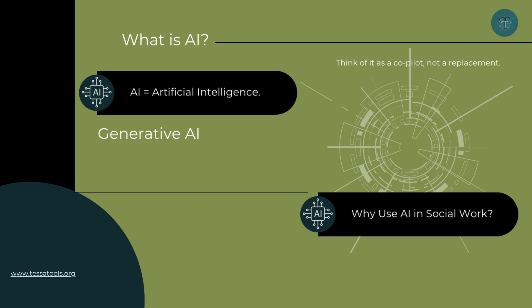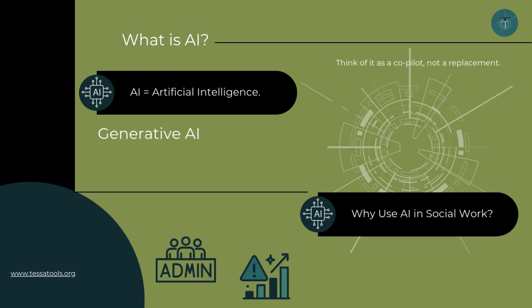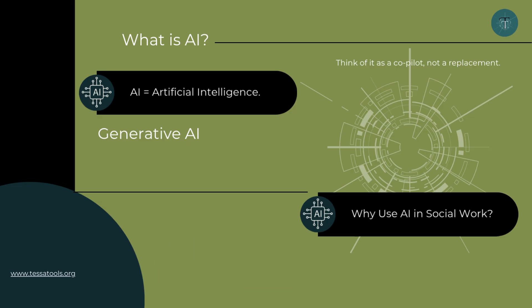AI has the potential to cut down on time spent doing repetitive admin. It can make long policies or pieces of law easier to digest and it can support reflective learning. But it has limits. It cannot replace our values, our ethics or the professional accountability that defines social work.